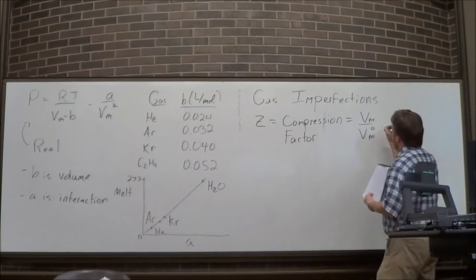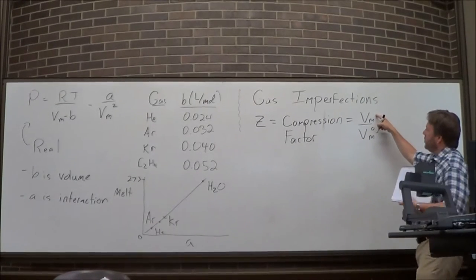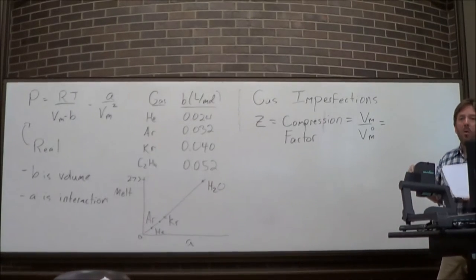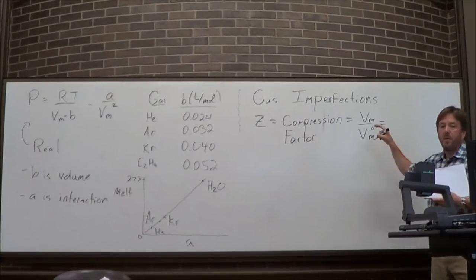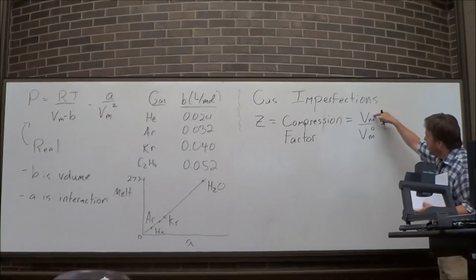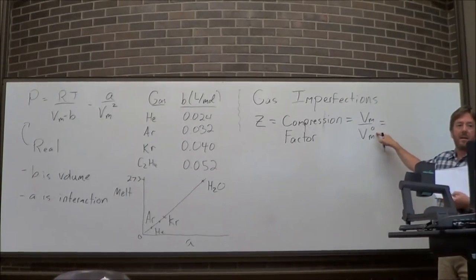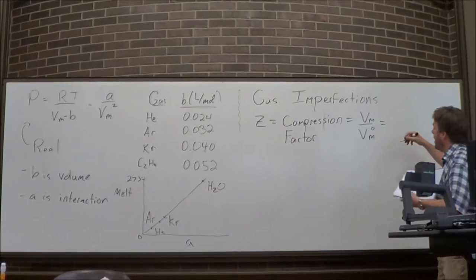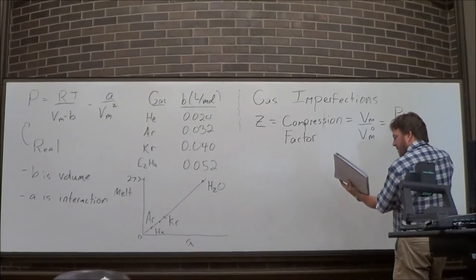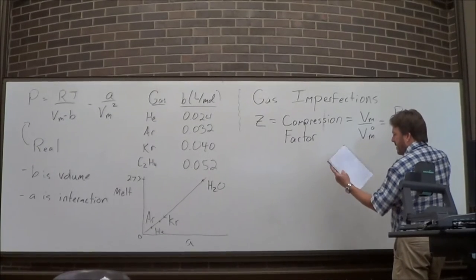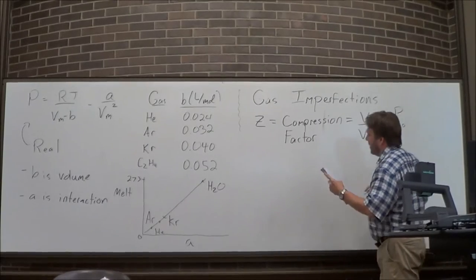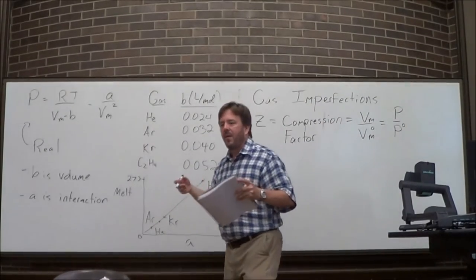The compression factor, denoted Z, has two definitions and I'm going to pick one. This would be real gas volume per mole divided by the perfect gas volume per mole, which I would know from the perfect gas equation. I've got experimental data versus theoretical data from PV equals nRT.